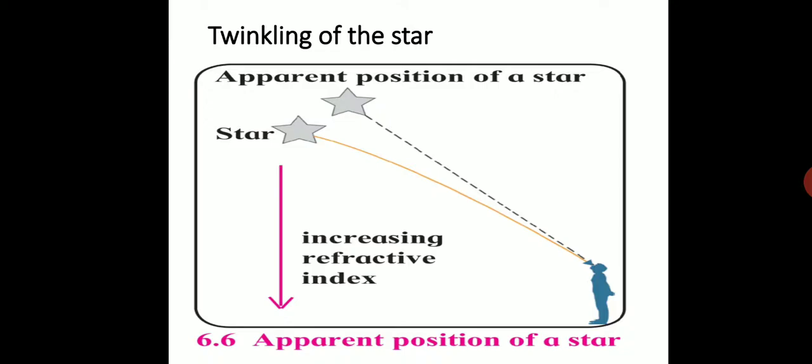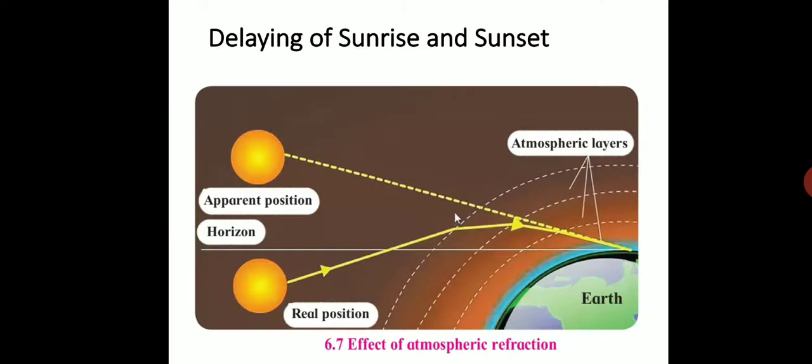Now let's see the third effect of refraction: the sun seen on the horizon for some time even before sunrise or after sunset. What is the reason behind it? As shown in the figure, this is our Earth, this is the horizon, and these are the layers of atmosphere around the Earth. The layers near the Earth are very dense compared to the outer layers.